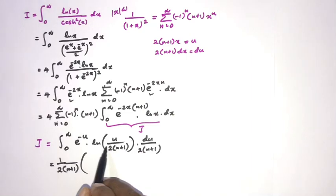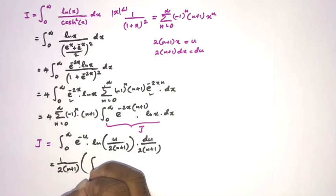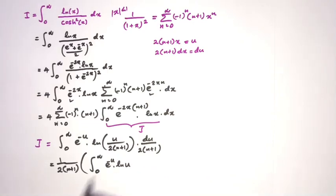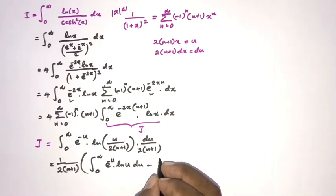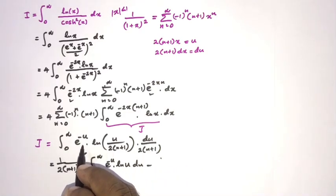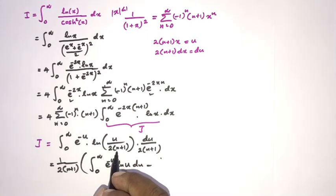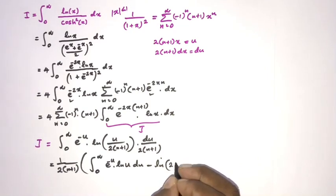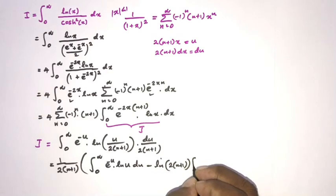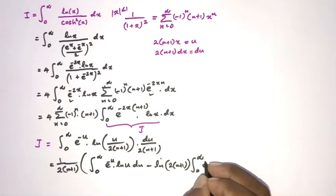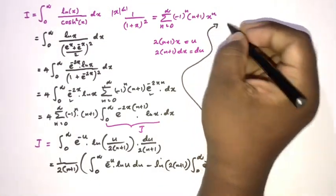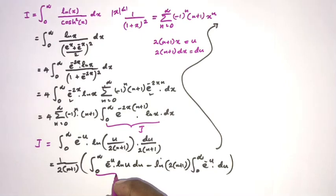Using the logarithm division rule, we split J into two integrals: ∫₀^∞ e^(−u) ln(u) du minus ln(2(n+1)) · ∫₀^∞ e^(−u) du, all divided by 2(n+1). The second integral equals 1 (the Γ(1) = 0! = 1).